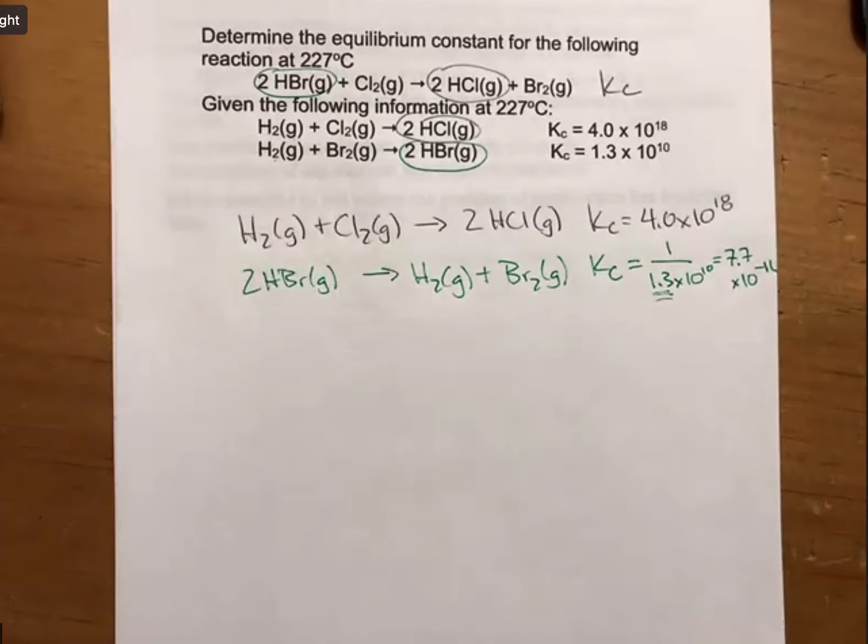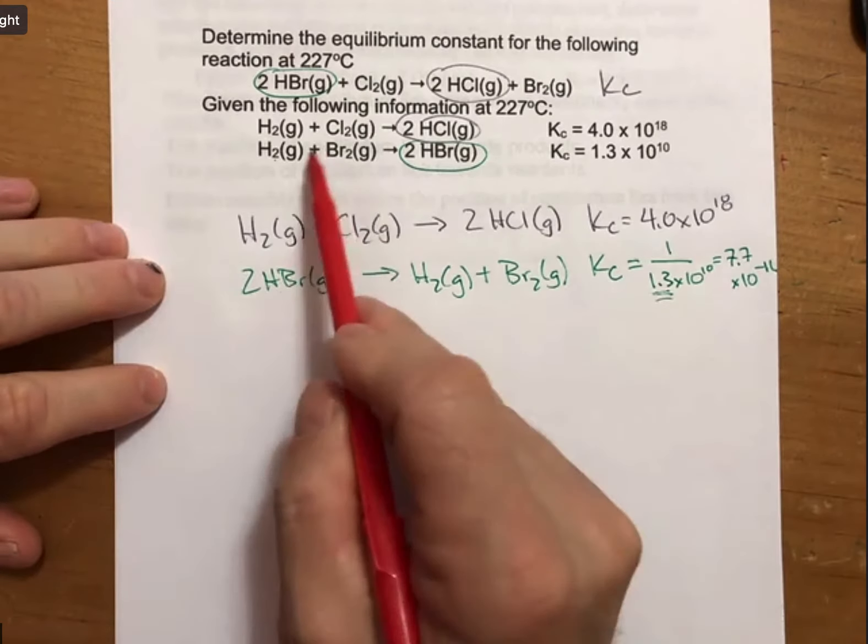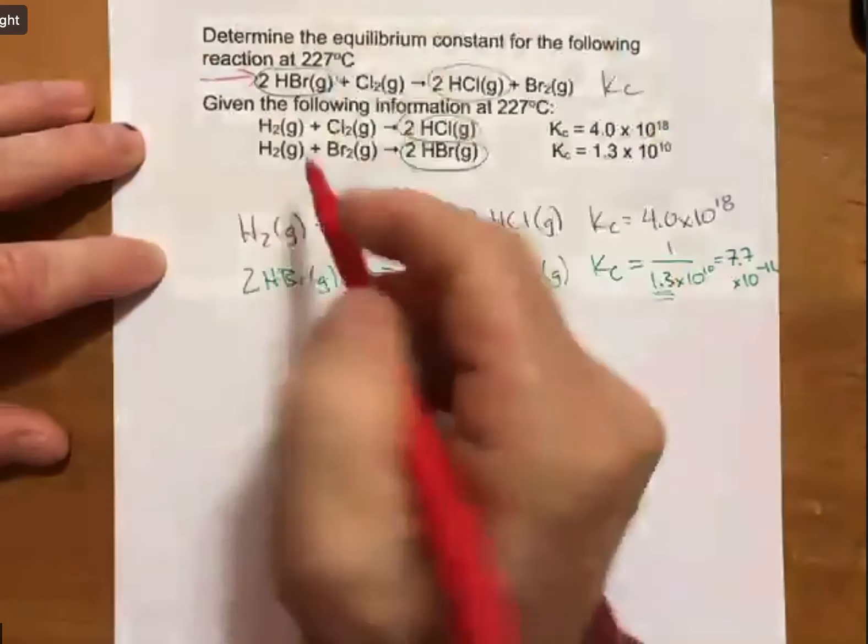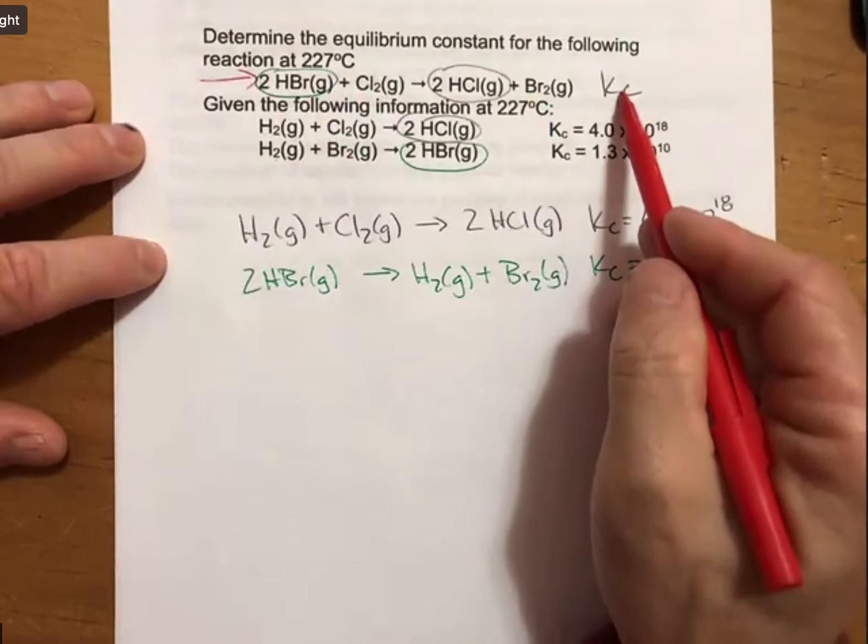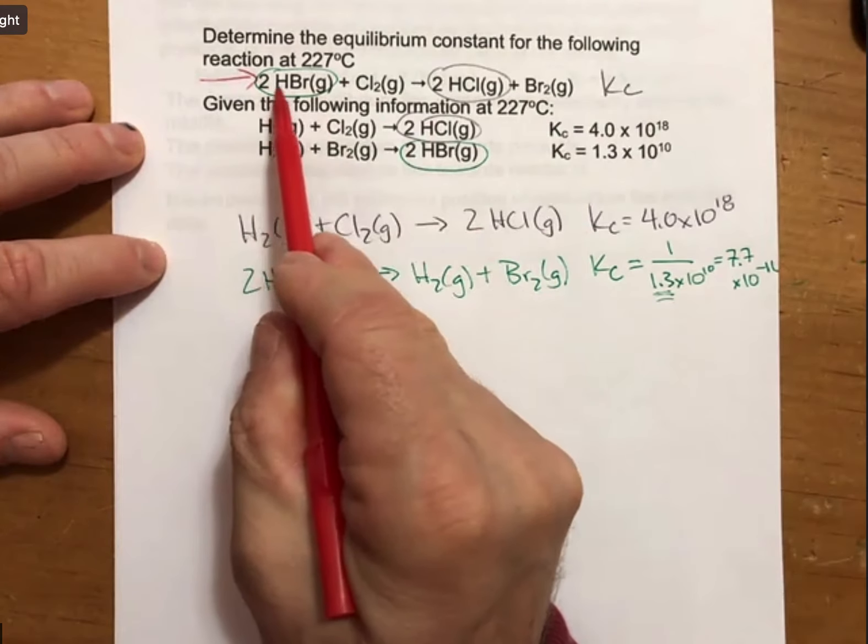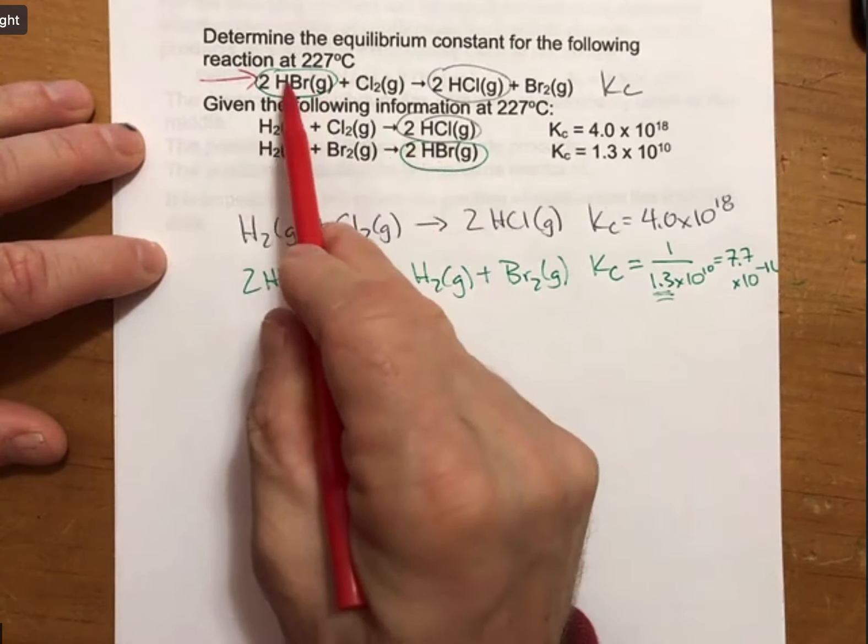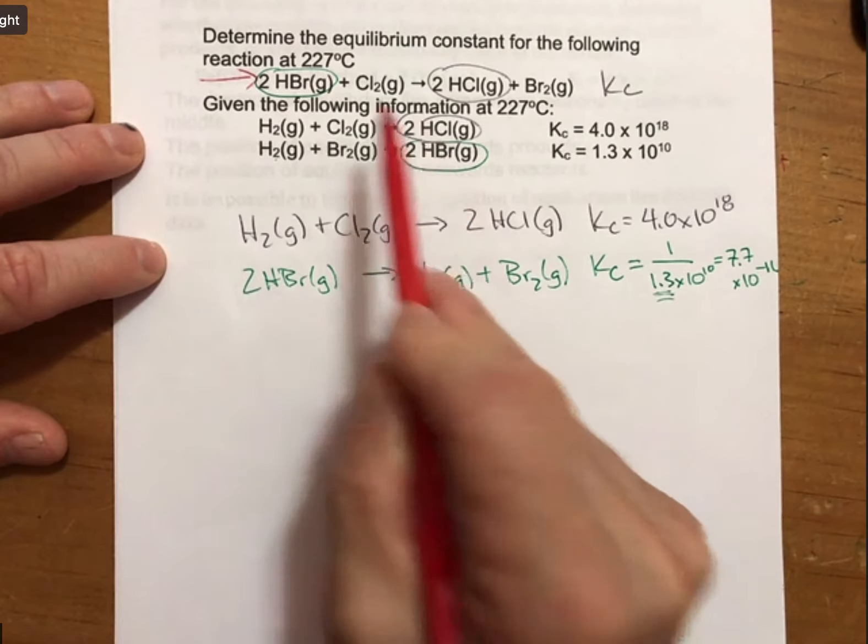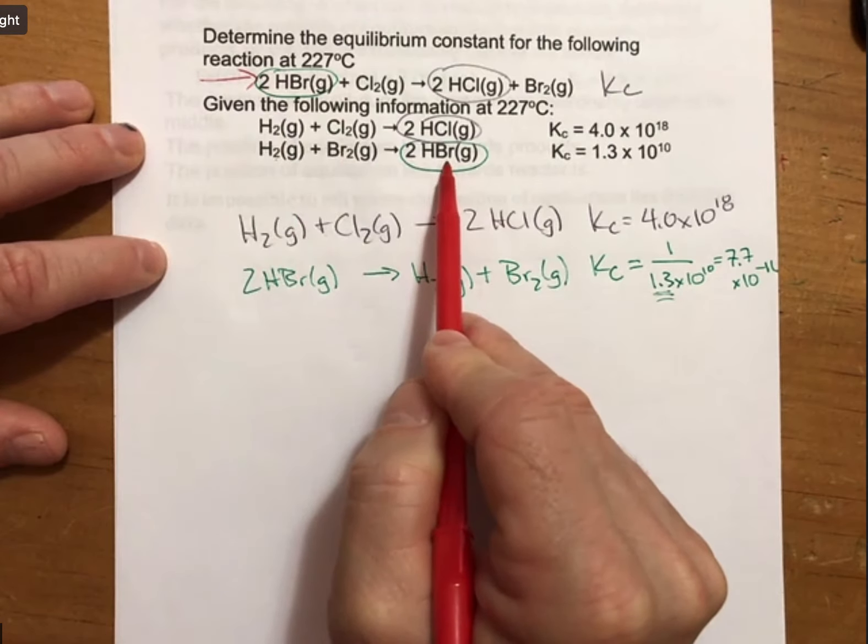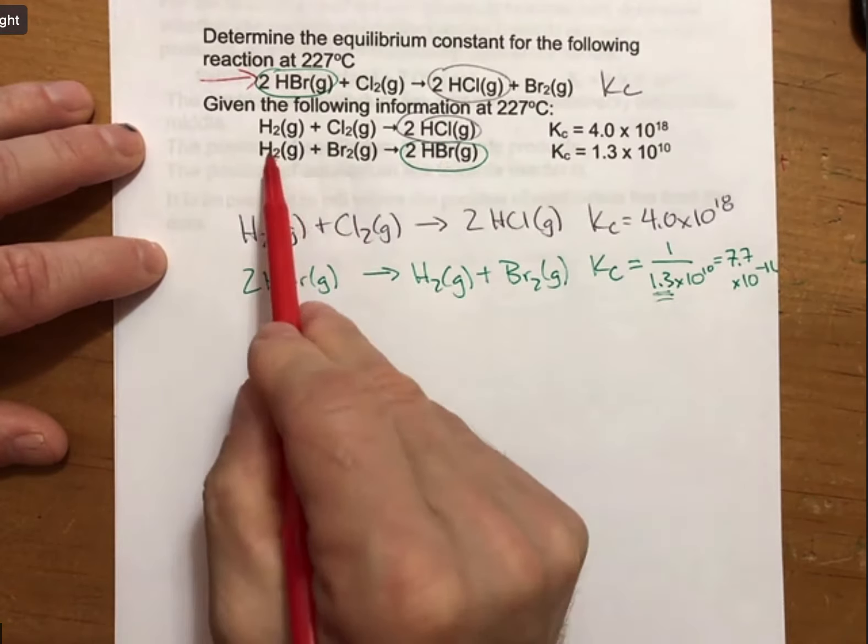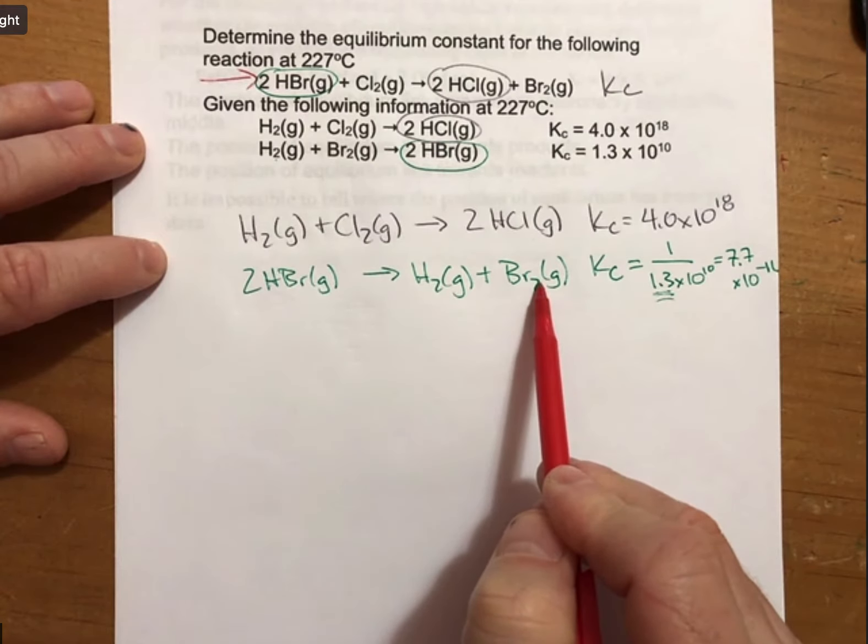Student asks: Why do you flip it? Please, can you explain it? Sure. If you're asking why did I take this reaction and flip it, it's because this is the reaction I'm trying to make. I see 2HBr gas as a reactant in the reaction I'm trying to make, I see 2HBr as a product here. So to make this into this, I have to turn this into a reactant by flipping this reaction. I took the products, made them reactants. I took the reactants and made them into products. Okay, thank you.